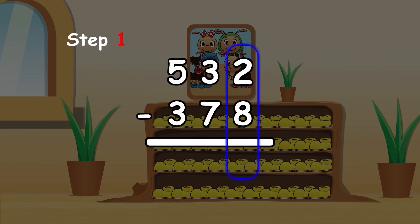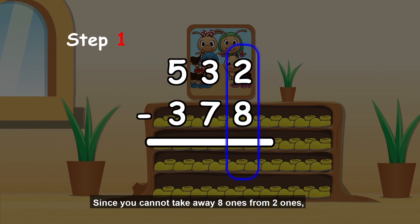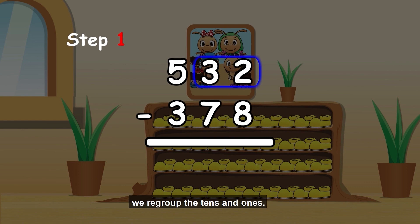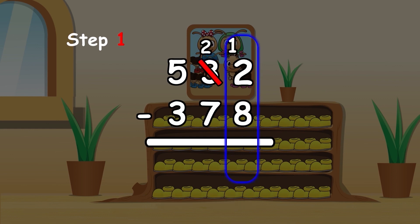Step 1. Subtract the ones. 2 minus 8. Since you cannot take away 8 ones from 2 ones, we regroup the tens and ones. 32 ones equals 2 tens and 12 ones. 12 minus 8 equals 4.